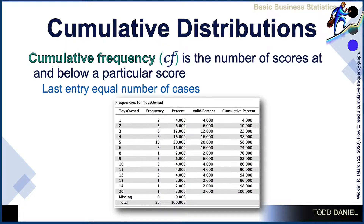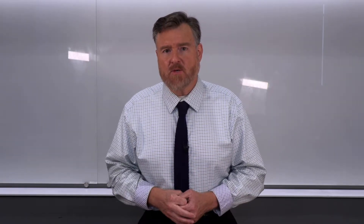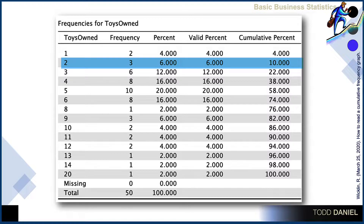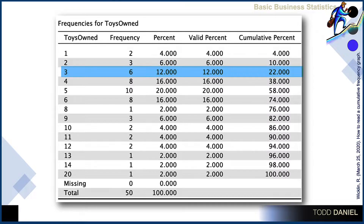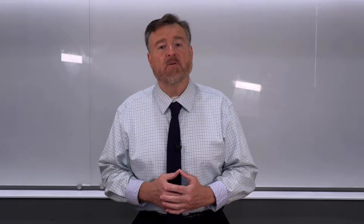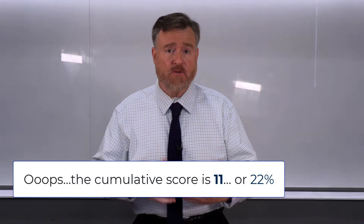Cumulative frequency is the number of scores at and below a particular score. Let's take a look at this frequency table to see how the cumulative frequencies work. We can see how many dogs own one toy, how many dogs own two toys, and how many dogs own three toys. Our cumulative frequency would be how many dogs own three or fewer toys. The number of scores at or below three is 12 out of 50 — that is our cumulative frequency.